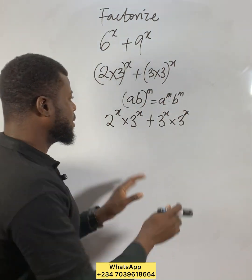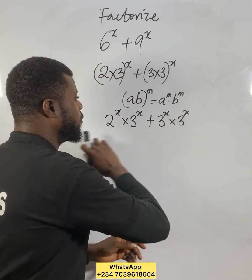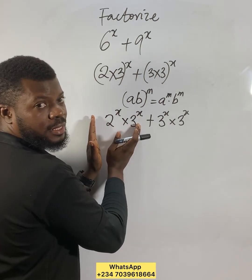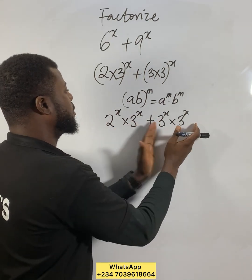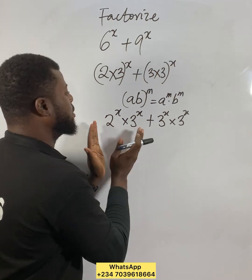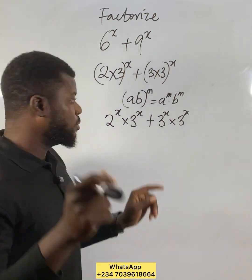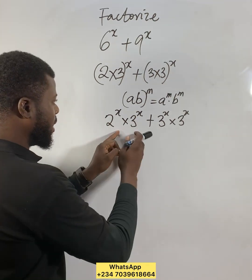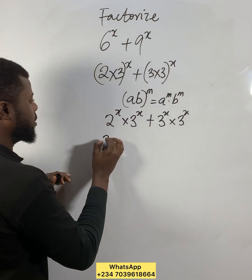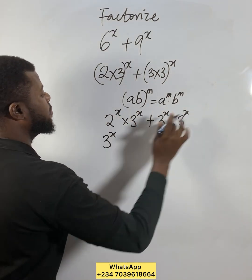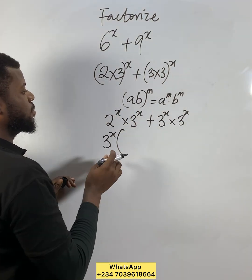Now ask yourself, what is common in the first part and second part? What is in common for all of them? 3^x is there in both parts, so just bring it out. 3^x is common for everything, so factor it out.